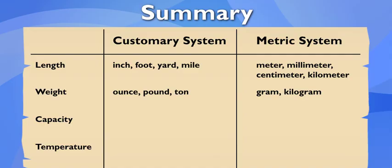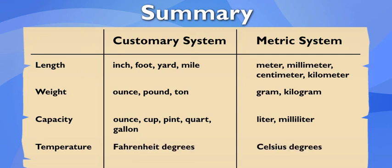For capacity, the customary system uses liquid ounces, cups, pints, quarts, and gallons, and the metric system uses liters and milliliters. And for temperature, it's Fahrenheit versus Celsius. That's it.